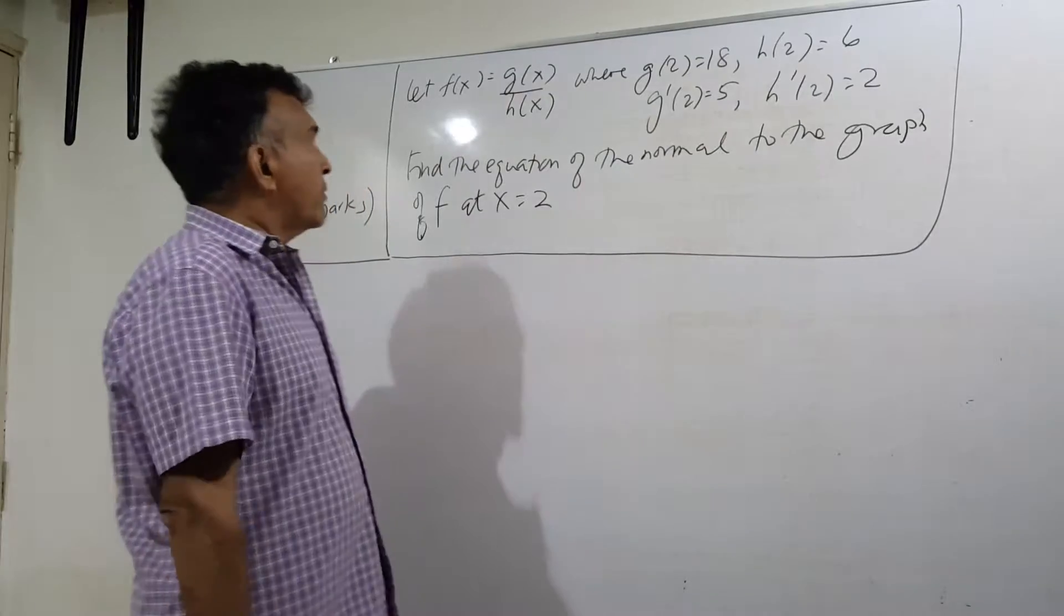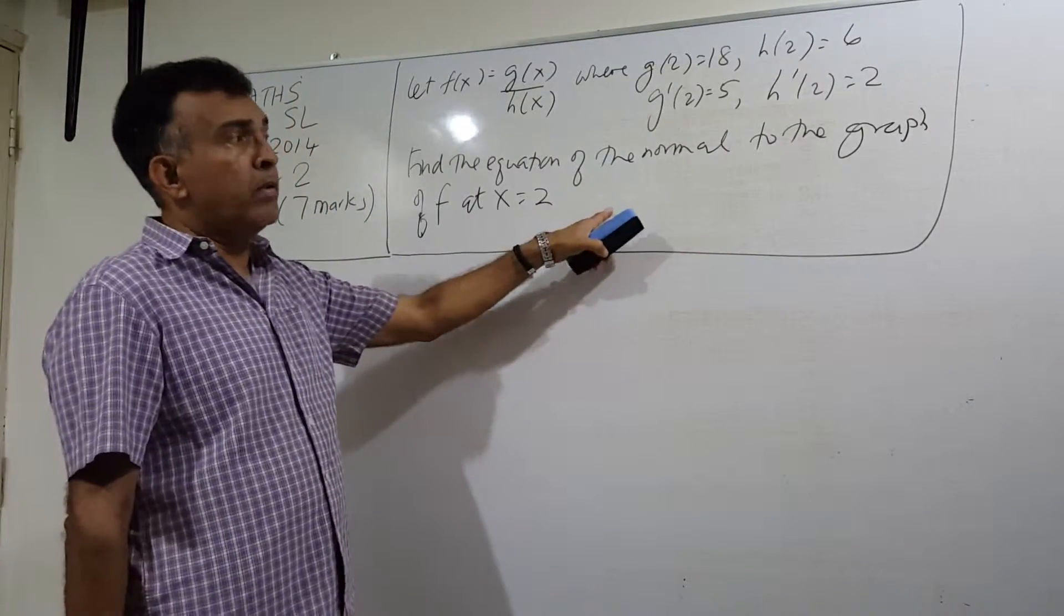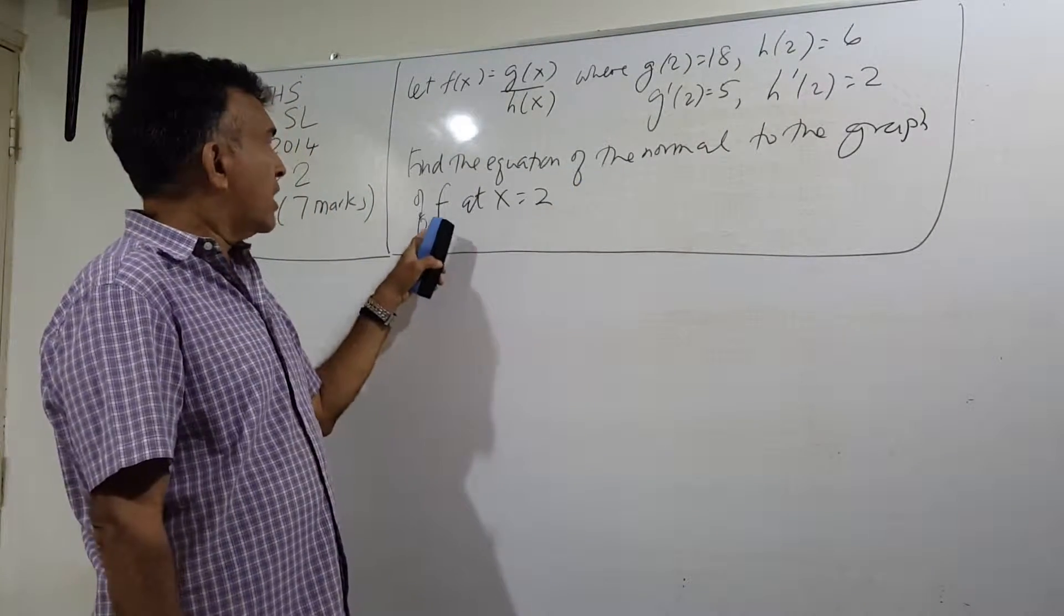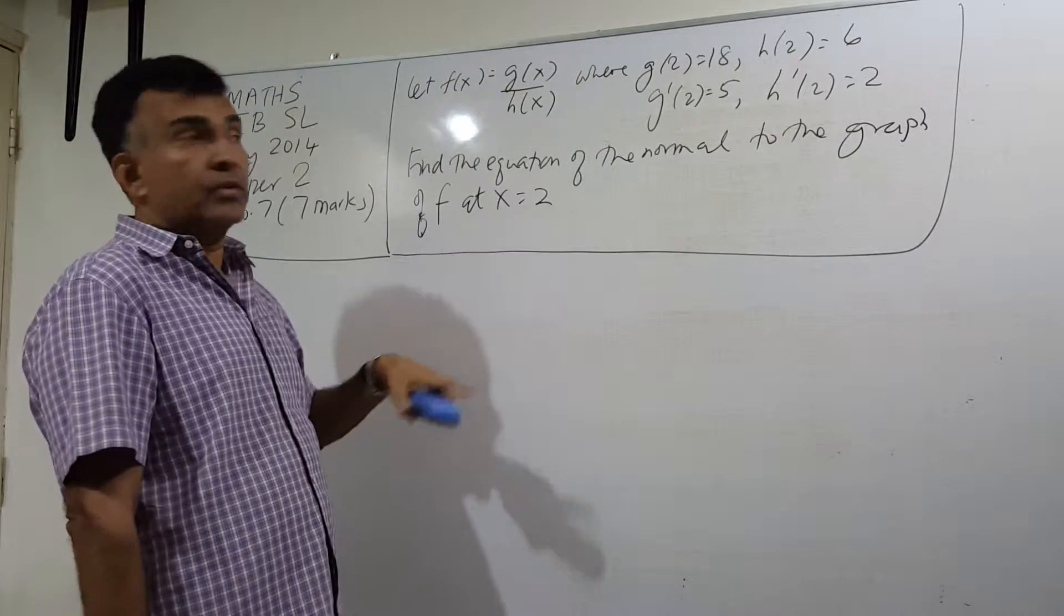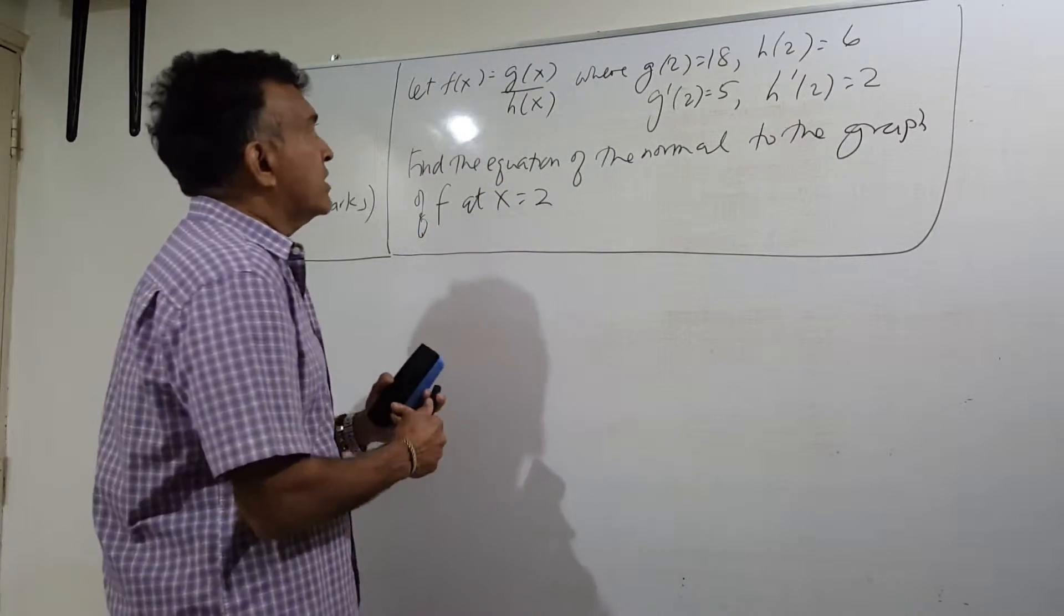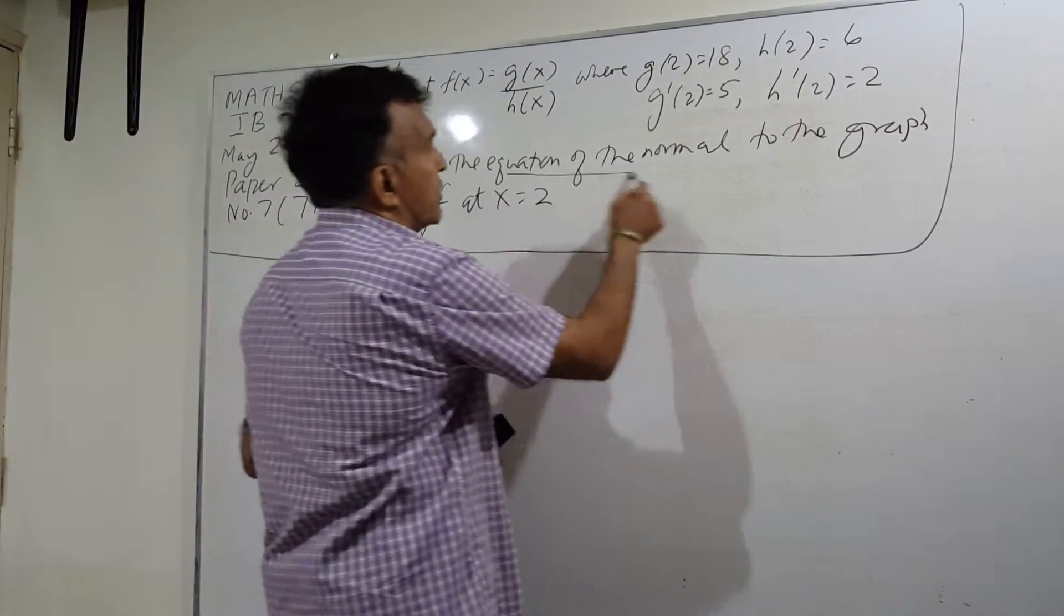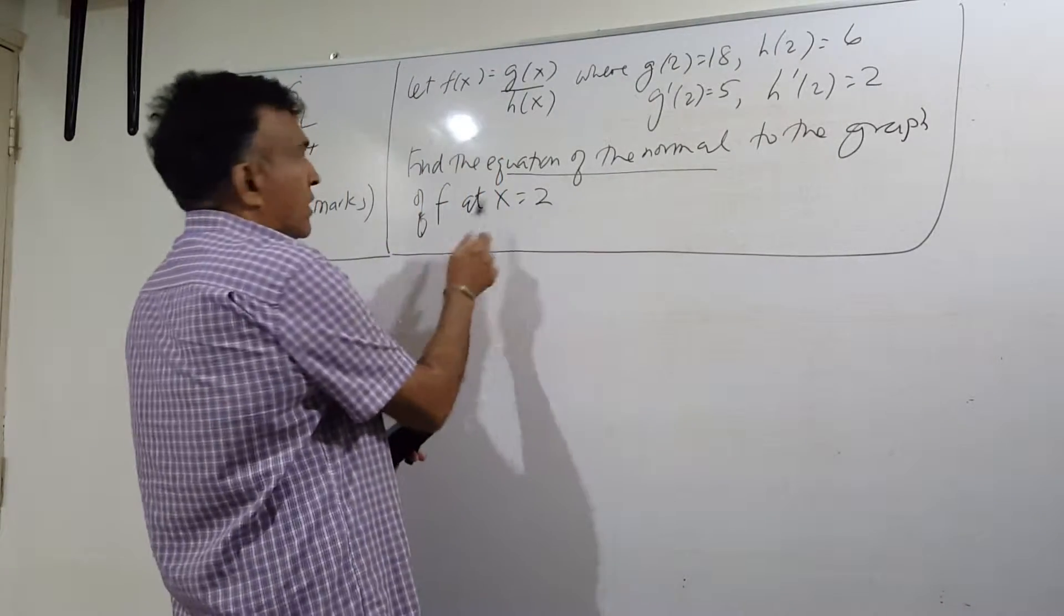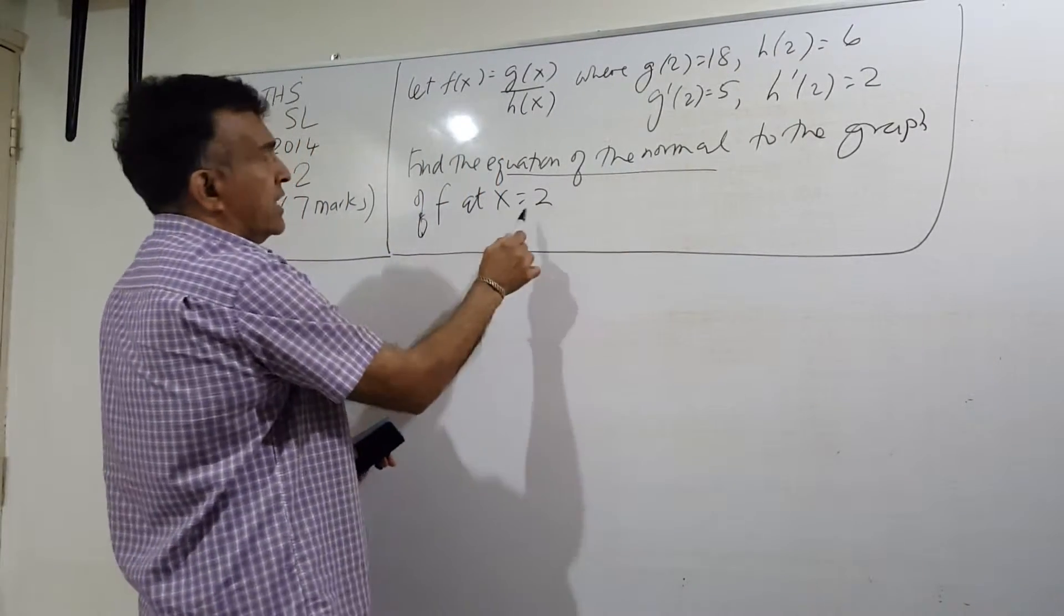What are we asked to find? We're asked to find the equation of the normal to the graph of f at x equals 2.